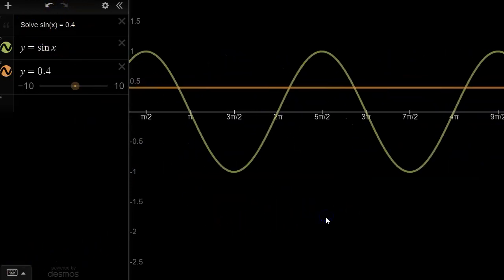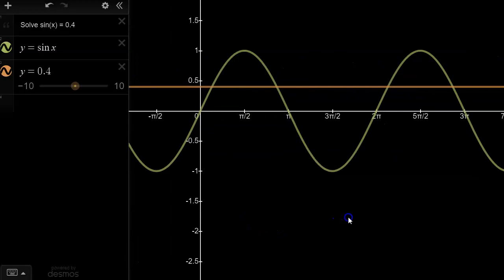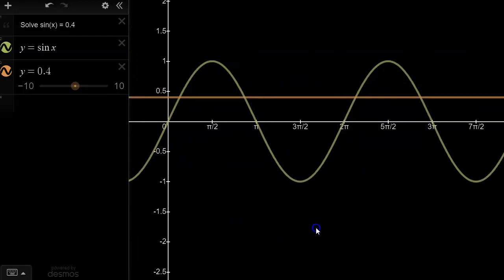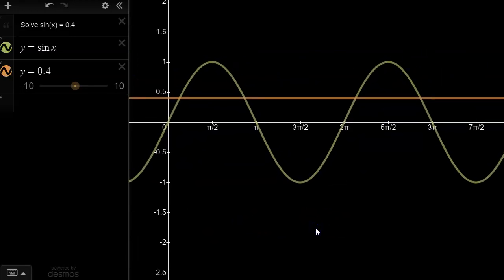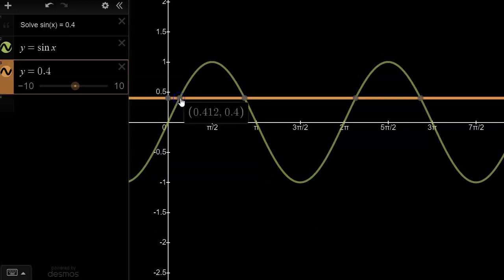Fortunately, you now know that roots repeat after every cycle. Therefore, we can express the general solution of a trigonometric equation by stating the two initial roots, so in this case x equals 0.412 and x equals 2.73, and simply adding multiples of the period to get the other roots.